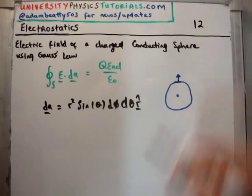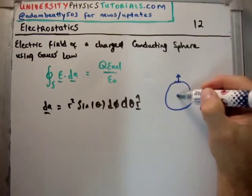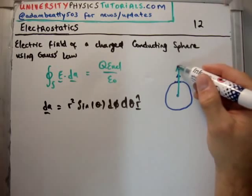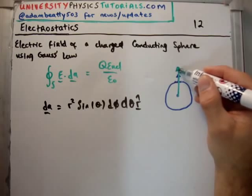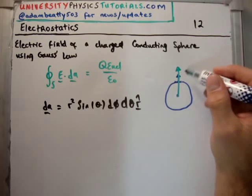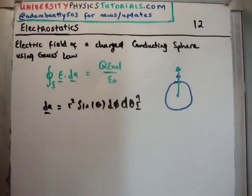dA actually has the normal vector to dA, so it's radial. But the electric field will also be radial in this case. The point is that dA is actually perpendicular to the surface area element anyway.